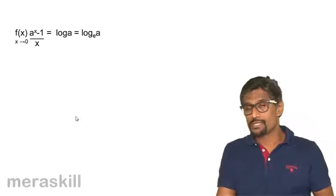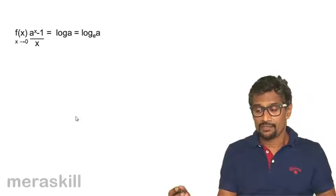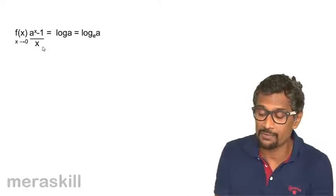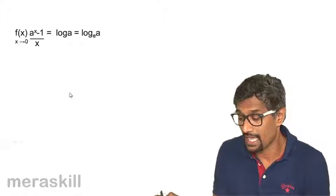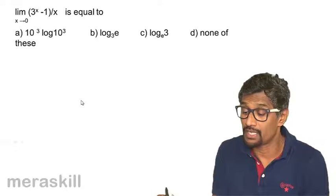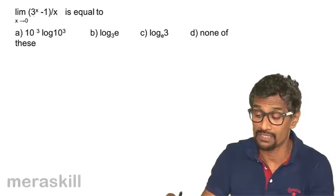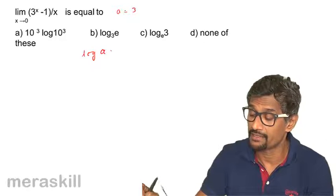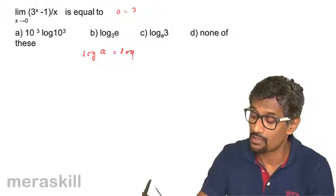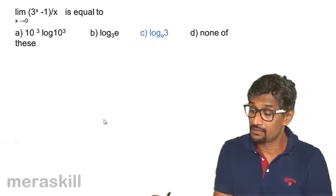Now we take up questions based on the formula: f(x) = (a^x - 1)/x, which equals log a to the base e. This is the same as the previous formula, but instead of e we have a general base a, so the result is ln(a), not 1. For example, the limit of (3^x - 1)/x as x tends to 0 is straightforward: here a = 3, so the answer is log 3 to the base e.